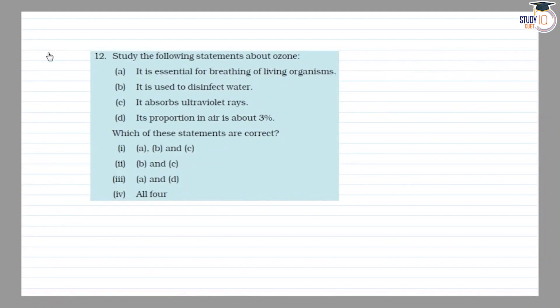Class 7 MCRT Chapter 18 Question 12: Study the following statements about ozone. The first option A is: it is essential for breathing of living organisms. B: it is used to disinfect water. C: it absorbs ultraviolet rays. D: it causes changes in shape and DNA.